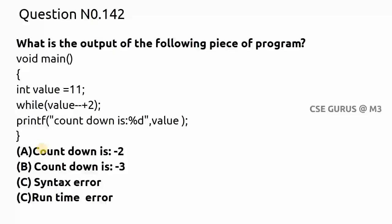Coming to question number 142: int value is set to 11. The while loop condition is 'value-- + 2'. The printf statement is independent and executes only after the while loop exits, i.e., when the condition becomes false. Initially value is 11, so 11 + 2 = 13, which is non-zero, so the loop continues and value is decremented to 10.